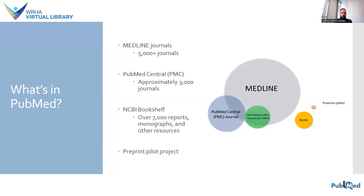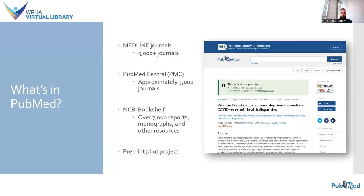PubMed also includes records for more than 7,000 free online reports, monographs, and other resources on biomedicine, health, and life sciences topics from NCBI Bookshelf, represented by the yellow circle in the graphic. Between Medline and PMC, there are more than 7,000 journals regularly added to PubMed.